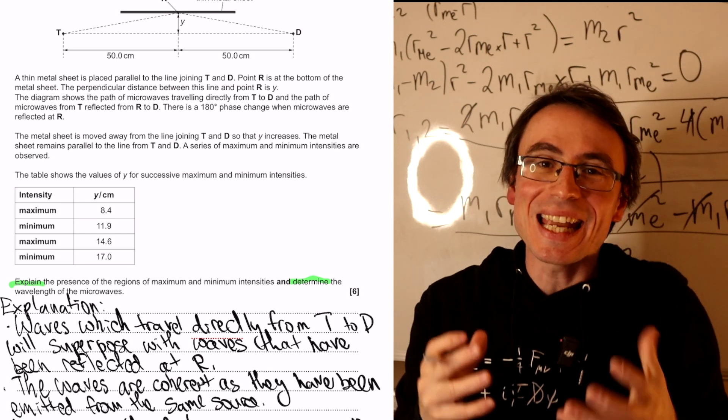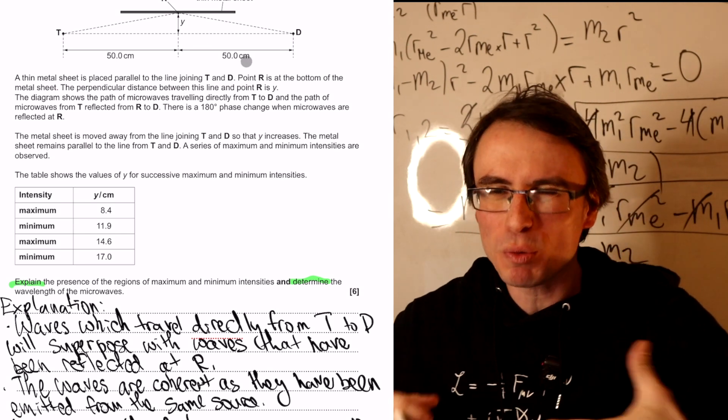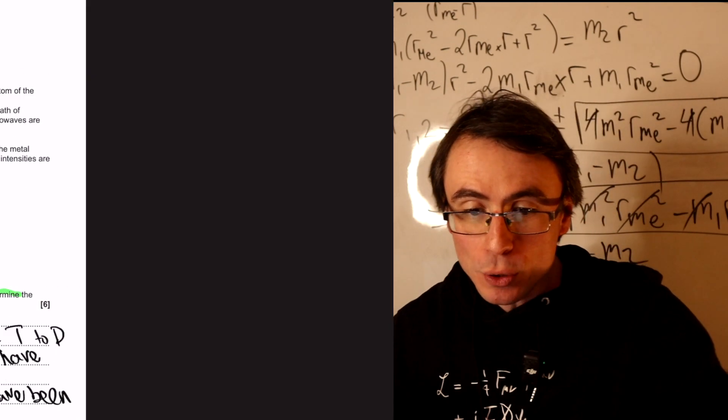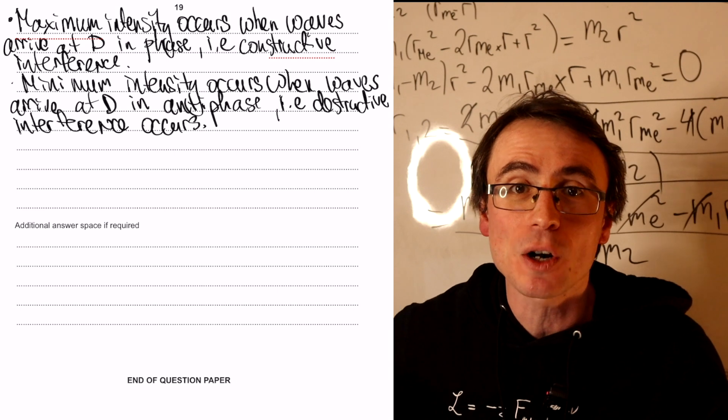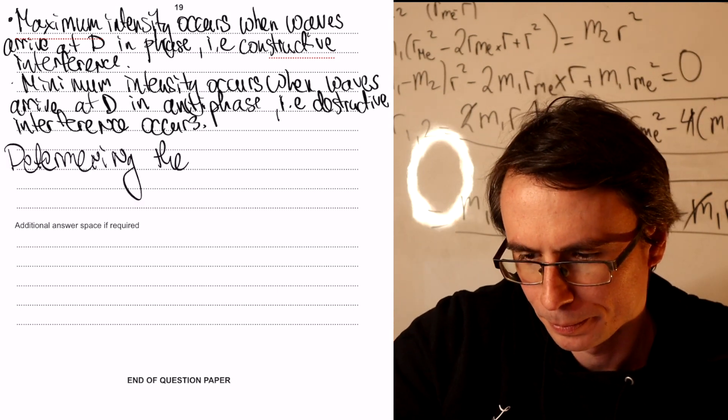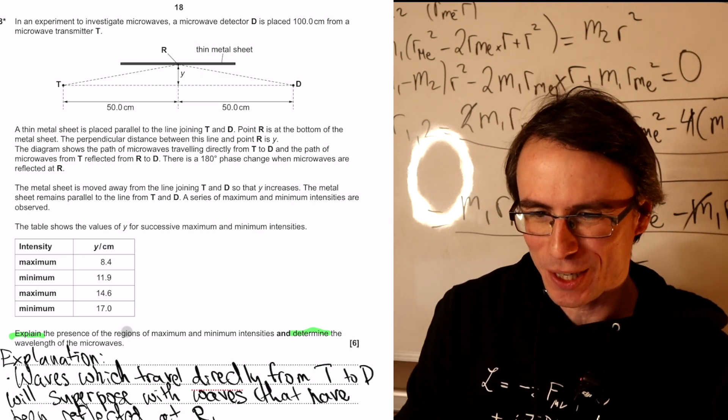The second part of this question is to actually determine the wavelength. Now, as soon as we see this geometry, we'll probably end up using Pythagoras's theorem or something similar. It's really useful to simply write a heading in our six marker and note this as our determination. And look at all this beautiful data that we're given. We can do plenty of calculations.